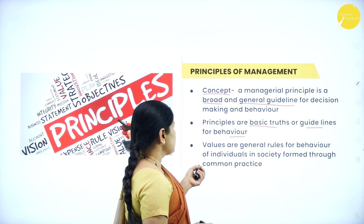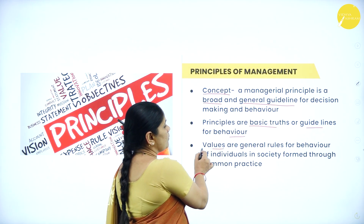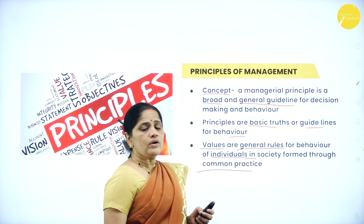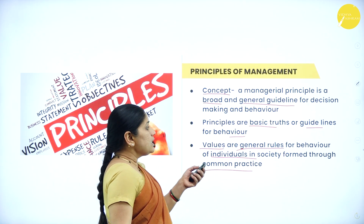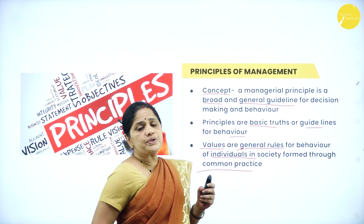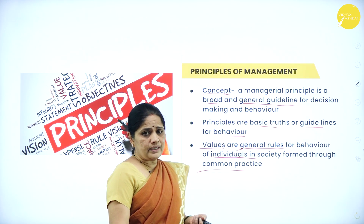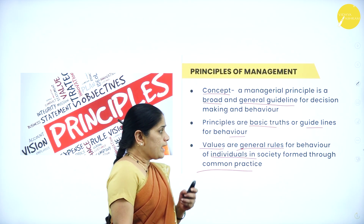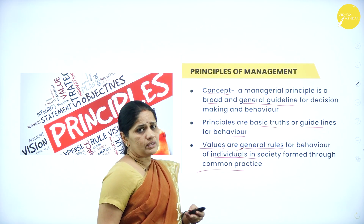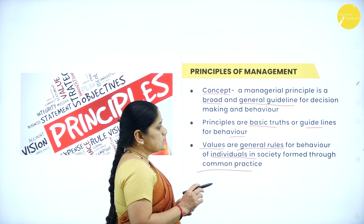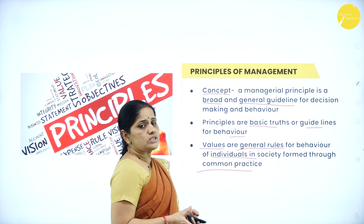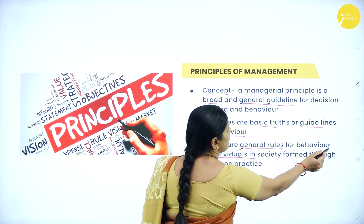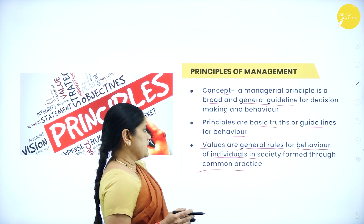We need to differentiate between principles and values. Values are general rules for behavior of individuals in a society, formed through common practice. For example, when you are riding a scooter or a four-wheeler, you have to follow the traffic rules. Those rules have been laid down by people controlling the traffic. The same way, these values are general rules for behavior. Man is a social being, and when he lives in society, he has to follow the code and conduct of that society — those are values.